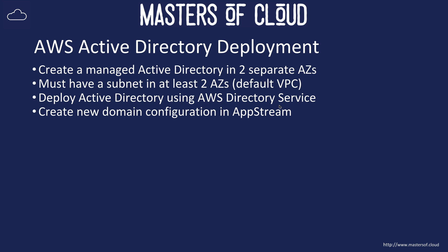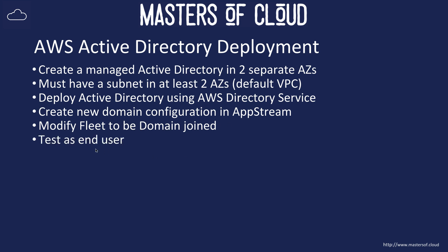We will create a new domain configuration in AppStream so AppStream will be able to join this Active Directory service that we've created. We will then modify the fleet to be domain joined, and then we can test as an end user to log in as a domain user to our AppStream stack and fleet.